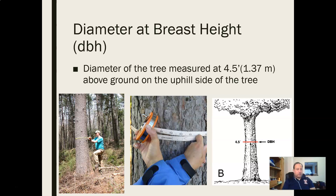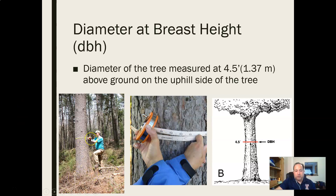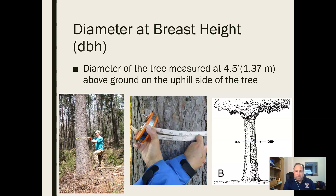The easiest way to find four and a half feet is to take your measuring tape, put it on the ground, pull it up to you a few times, and find where four and a half feet is on your body so you can find that spot consistently. It's important to always measure on the uphill side of the tree because, depending on the topography, measuring on the downhill side would give you a breast height that's actually lower — not an accurate measurement of the bole of the tree.